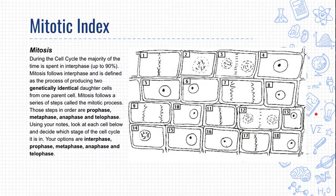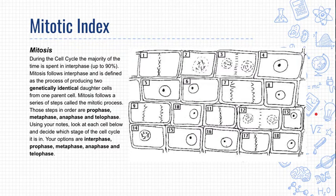You're going to go to your notes document. For each of these cells, please write down whether they're in prophase, metaphase, anaphase, telophase, or interphase. Then you're going to calculate the mitotic index for this population of cells — that's the number of cells in any phase of mitosis over the total number of cells in the sample. So pause this video and do that now.